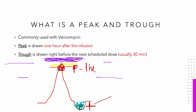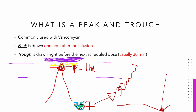Now trough — I take that blood 30 minutes before I give the next dose, because I want to know at its lowest level, after sleep and that medication is burned out and its metabolism has dropped it down — is this level enough to kill this little nasty bug right here that is causing this issue?